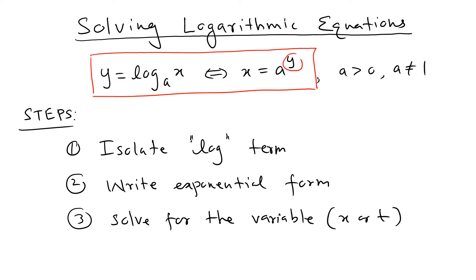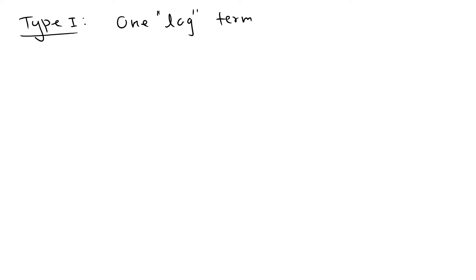We're going to go through several types — basically three different types. Type 1 is where there's only one log term. For example, solve ln x = 3. This is a base e problem.